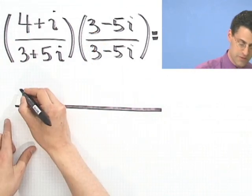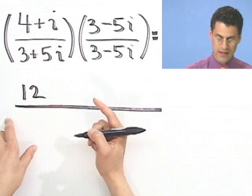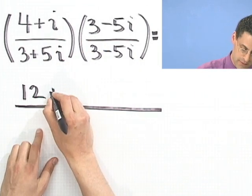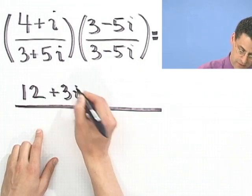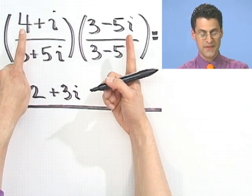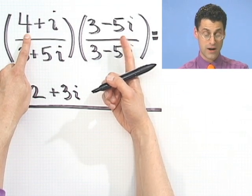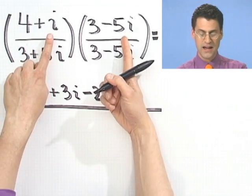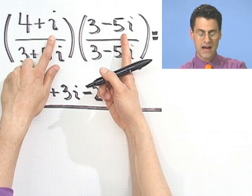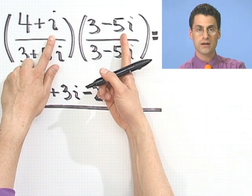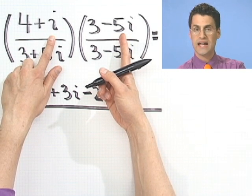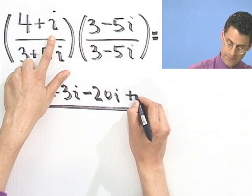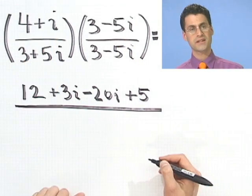Well, I'd have the 4 times the 3, which produces a 12. And then my inside term produces the complex number 3i. You may start doing this all in one step, but I'm not going to do it right now. And then the outside produces the complex number of minus 20i. And then the last times the last. Now I'm going to do this in one fell swoop. It looks like minus 5i squared. But remember, i squared is negative 1. So I actually see minus 5 times negative 1, which is a plus 5.